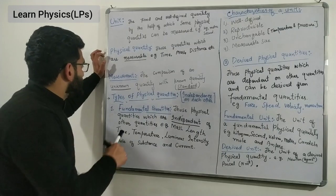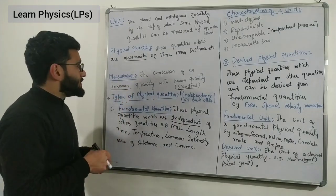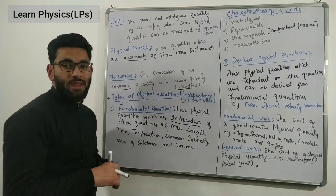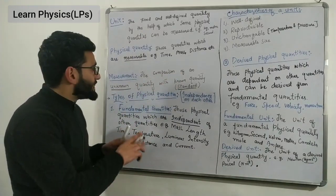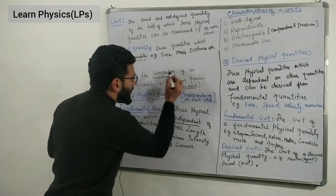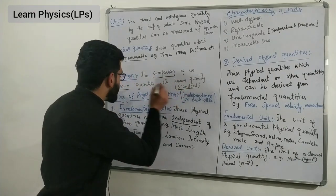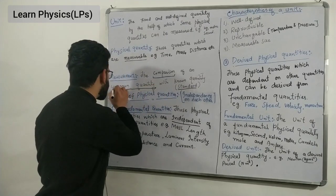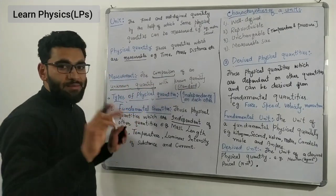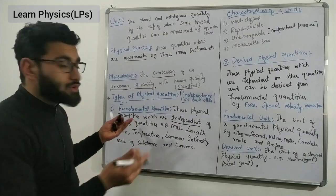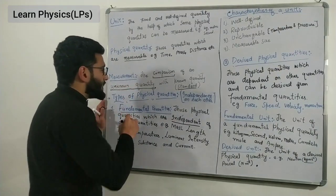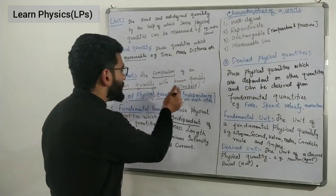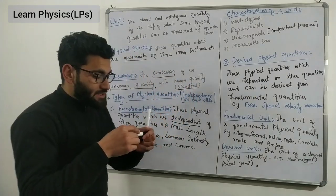Coming to the next point: before discussing the types, let's understand what measurement is. Measurement is the comparison of an unknown quantity — that means a quantity whose value we do not know — with a known quantity.